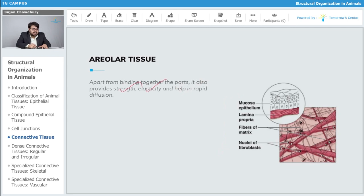It provides elasticity and helps in rapid diffusion. Areolar tissue has several functions, not only one. For carrying out these functions, specialized cells are present in the tissue, and these are widely distributed just under the skin.